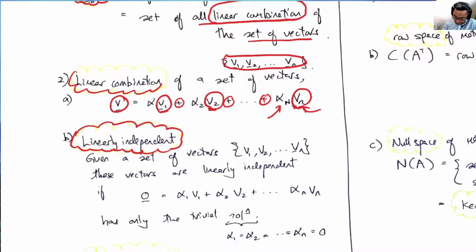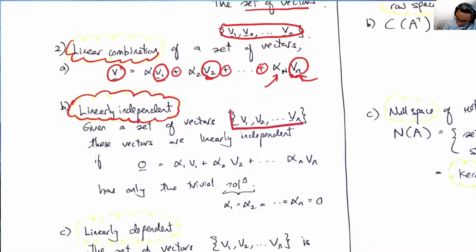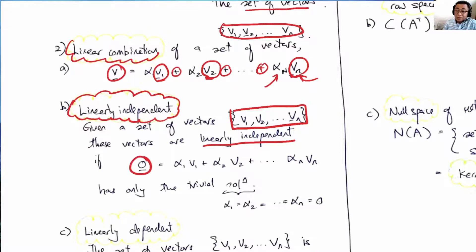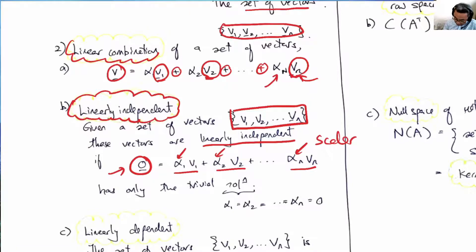Linear independence means that, given a set of vectors V1 to Vn, we want to determine whether this set of vectors is linearly independent. To check this, we only need to check whether the zero vector can be formed by a linear combination of this set. If the only way to get the zero vector is for all scalars alpha 1 to alpha n to be zero, then the set is linearly independent. If not, they are linearly dependent.